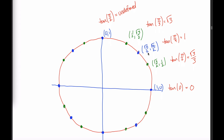A helpful way to think about tangent: the line from the origin to a point on the unit circle has a slope equal to the change in y divided by the change in x. Since you're starting from the origin, that's just the y-coordinate divided by the x-coordinate. So the tangent of a given angle is the slope of the line connecting the origin to that point on the unit circle. That's why tangent is undefined at π/2 — you can't have the slope of a vertical line — and tangent of 0 is 0, because a horizontal line has slope zero.